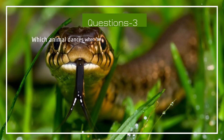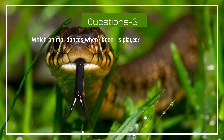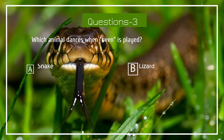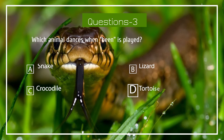Which animal dances when a been (flute) is played? Options: Snake, Lizard, Crocodile, Tortoise.